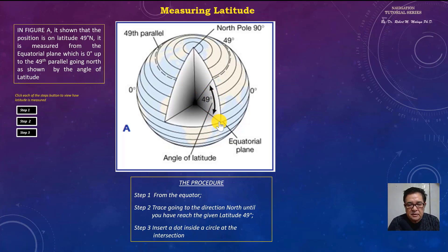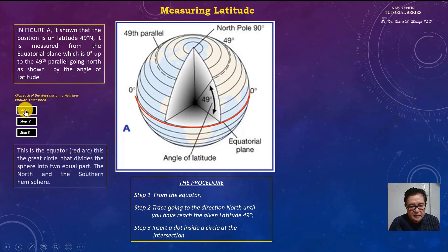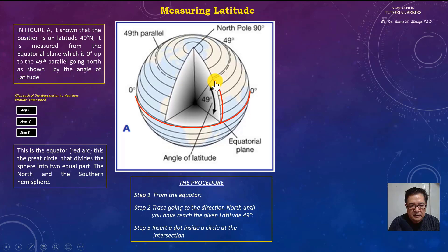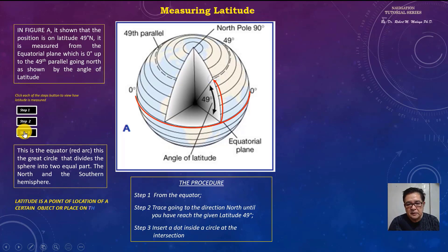The procedure in tracing or measuring latitude: Step one, start from the equator. Step two, trace going in the direction of north until you have reached the given latitude — in this case, the 49th parallel. Step three, insert a dot inside a circle at the intersection. This is now your point of latitude.